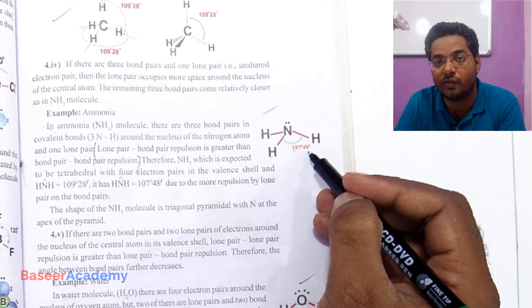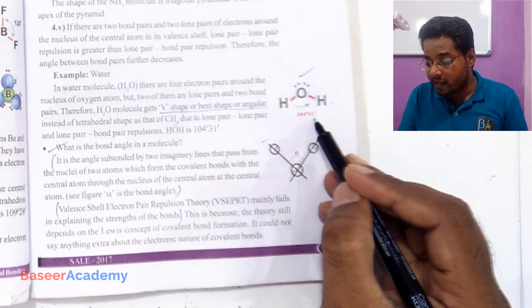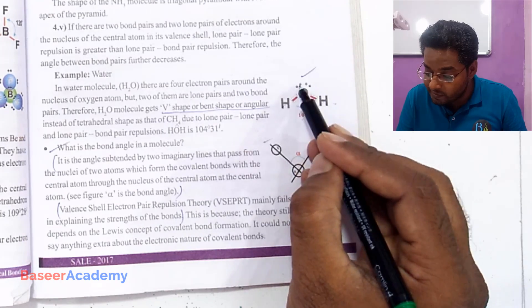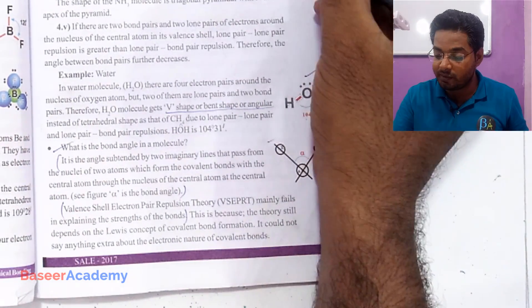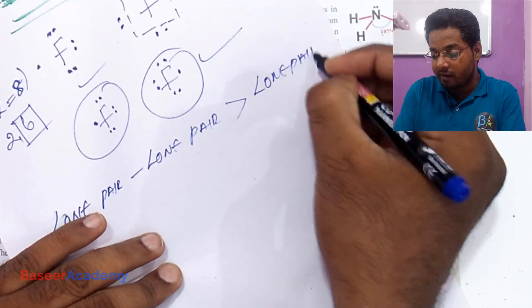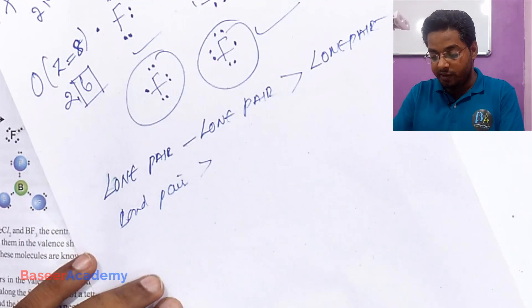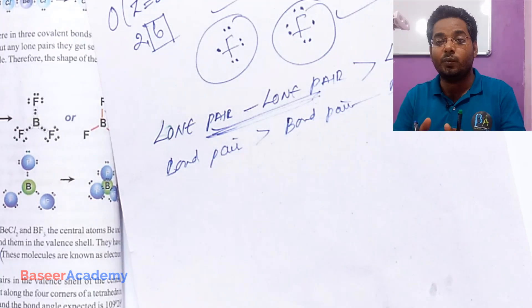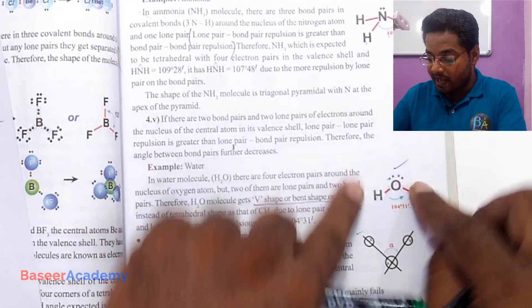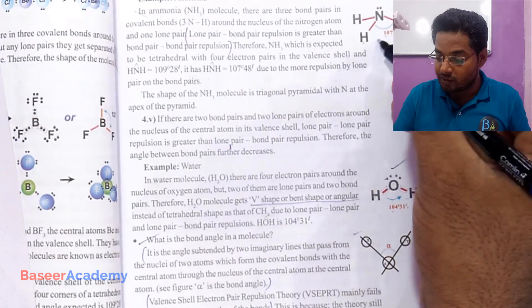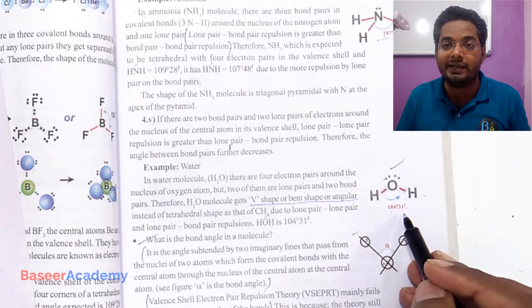In the water molecule, the bond angle is 104°31'. This is because oxygen has two lone pairs, and the repulsion between lone pair and lone pair is much higher than lone pair–bond pair repulsion. The sequence is: lone pair–lone pair repulsion > lone pair–bond pair repulsion > bond pair–bond pair repulsion. So the two lone pairs push the bond pairs further together, decreasing the angle from 107° to 104°31'.